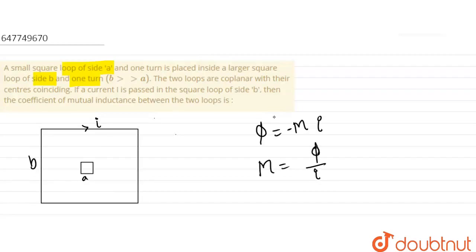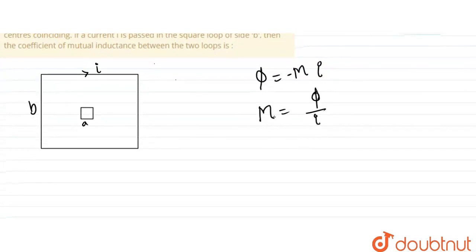Flux is area into magnetic field. So first of all, we find magnetic field at its center. Because the smaller loop is very small, we use the center. What is the magnetic field at the center? First of all, we find the magnetic field at the center.